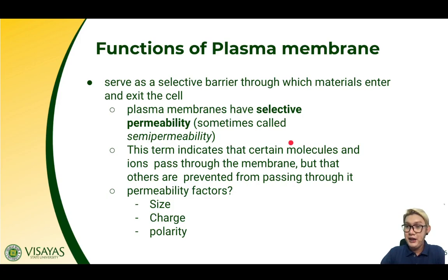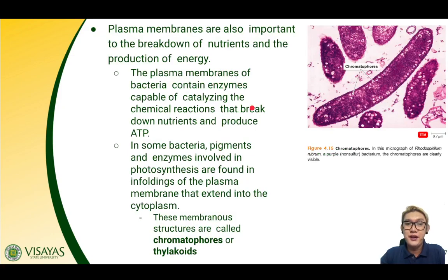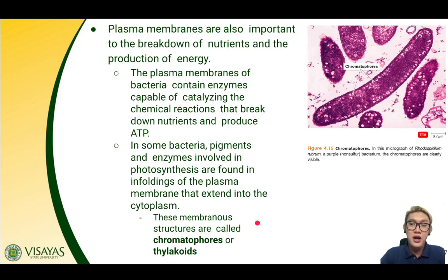Plasma membranes have selective permeability, sometimes called semi-permeability, meaning certain molecules and ions pass through the membrane while others are prevented. What determines if a molecule or ion can pass through depends on the size, charge, and polarity of the molecule. Plasma membranes are also important for the breakdown of nutrients and the production of energy. In some species, enzymes found in the membrane help in energy generation in the form of ATP. Others have components that harvest energy from the sun or other sources to produce their own food — membranous structures called chromatophores or thylakoids that harvest energy to photosynthesize.